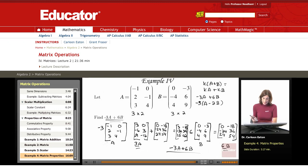And what I did is I took A, I multiplied it by the scalar negative 3 to get negative 3A. I took 6 and I multiplied it by the second matrix B to get 6B. Then I added negative 3A plus 6B as my solution.